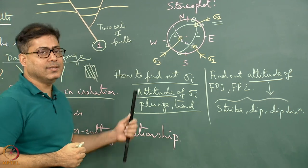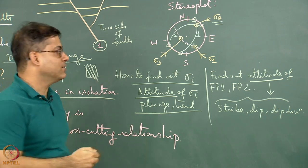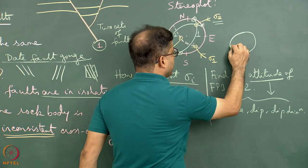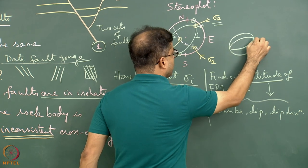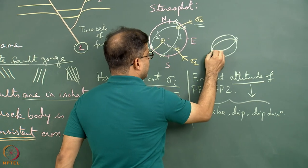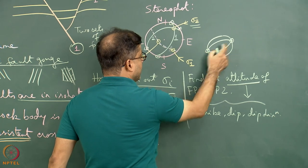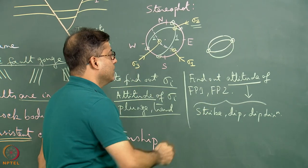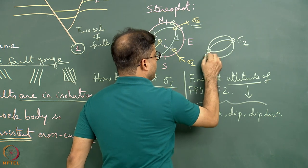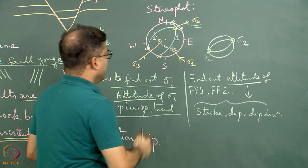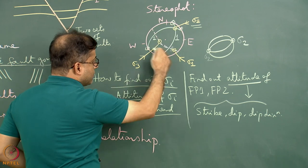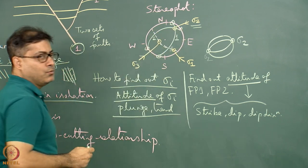This is in one way similar to the Andersonian cases. In the Andersonian diagrams, where the conjugate fault planes intersect — essentially the shared strike line — that intersection is marked as sigma 2. Similarly, here on the stereonet, where the two great circles intersect inside the stereonet, that point is sigma 2.